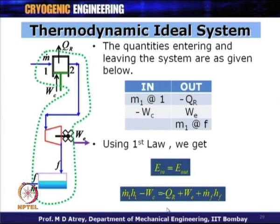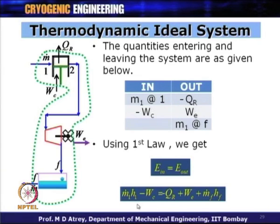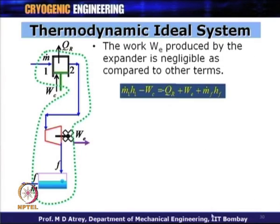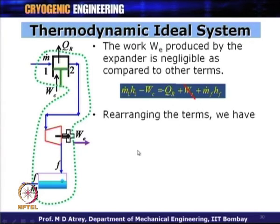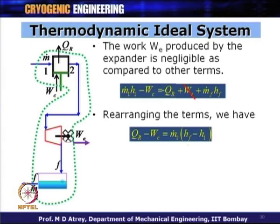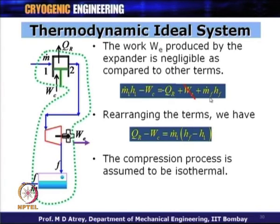Since M_1 dot equals M_F dot in this ideal system, and the work W_E produced by the expander is negligible compared to other terms, neglecting W_E the equation reduces to: Q_R minus W_C equals M_1(H_F minus H_1). The compression process is assumed isothermal — temperature remains constant.